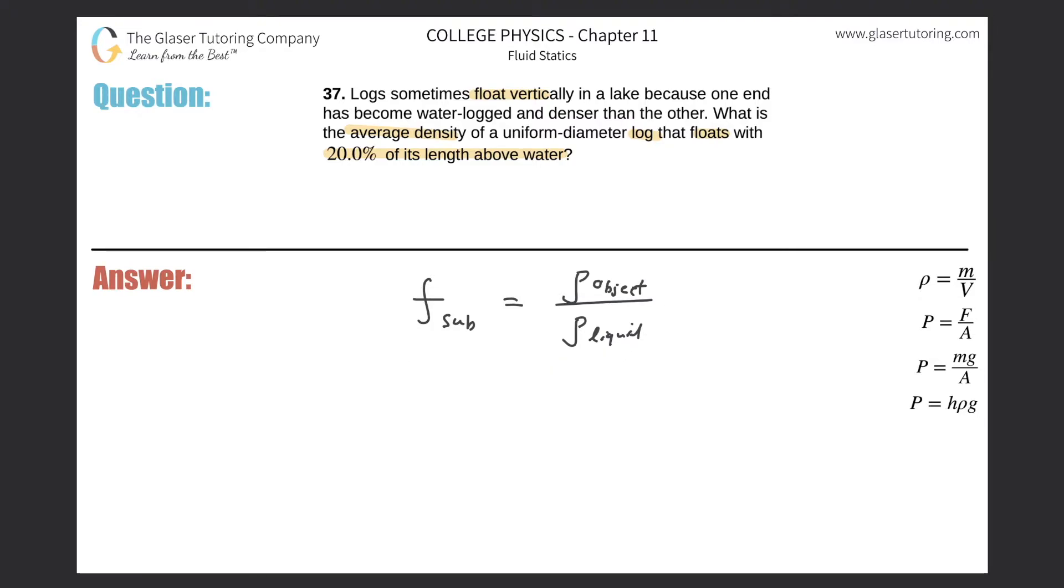Now the question is telling us 20% of its length is above the water. That is exactly opposite to the fraction submerged. But if we know the fraction submerged, we can easily create an equation to represent the fraction above, which is what 20% is—essentially a fraction that's above the water.